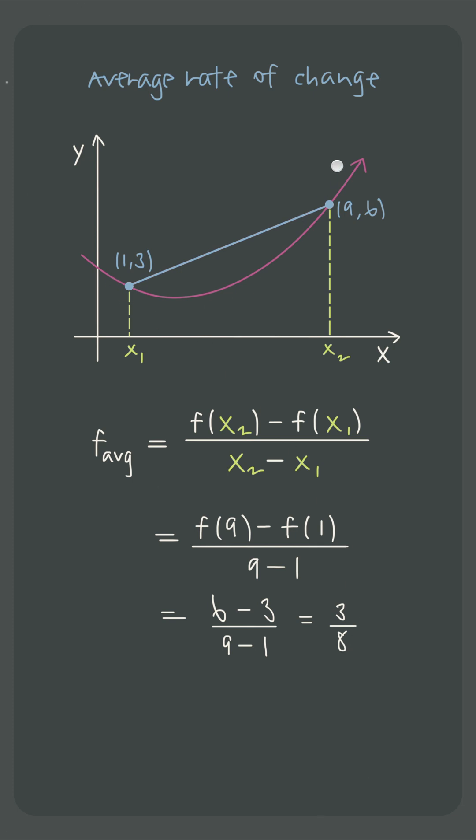So the average rate of change of this function between x equals 1 and x equals 9 is 3 eighths, which means that for every one unit we move horizontally between x equals 1 and x equals 9, we move up vertically 3 eighths of a unit, about half a unit, which means that the function is, on average, increasing at that rate.